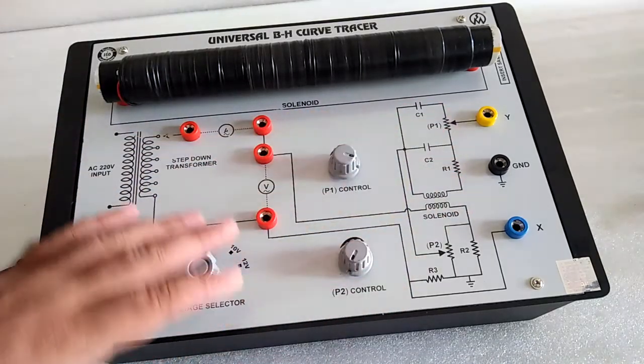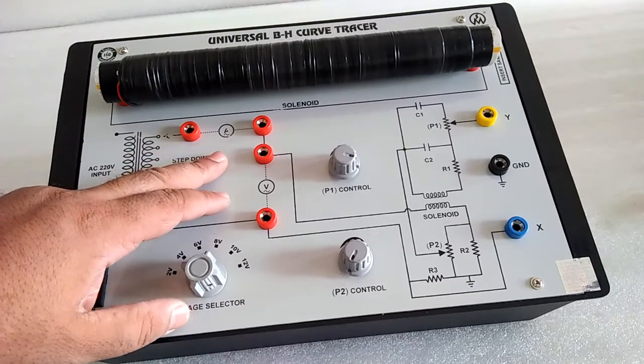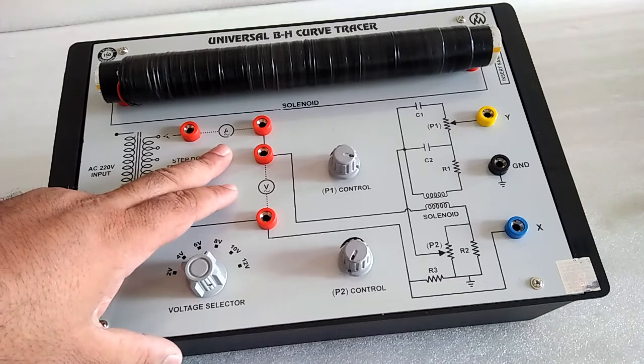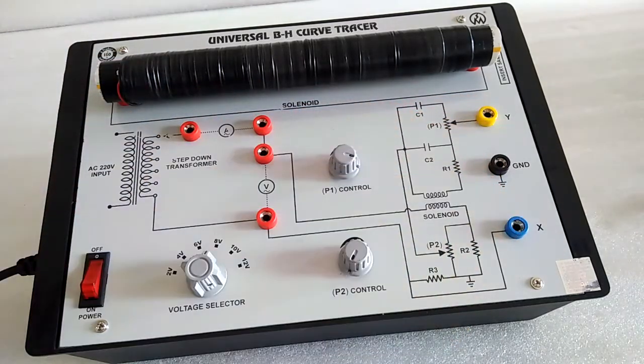Here we have two required optional accessories. One is a meter having range of AC current, and a CRO to see the BH curve.